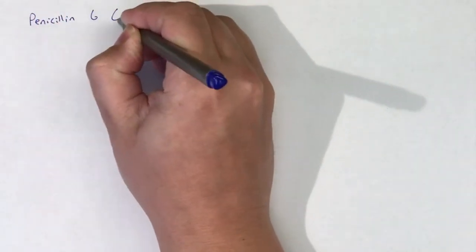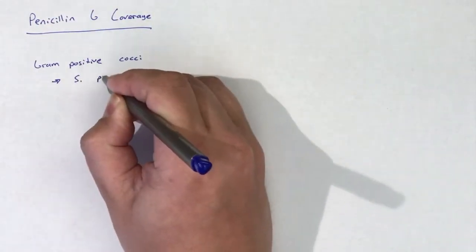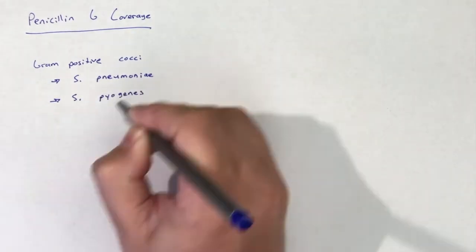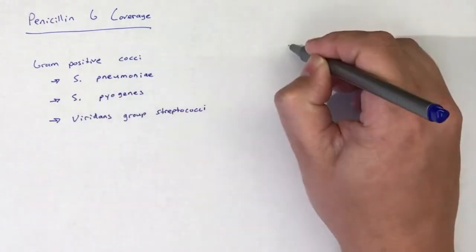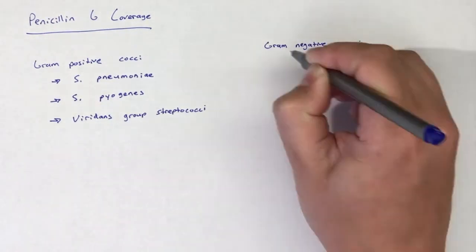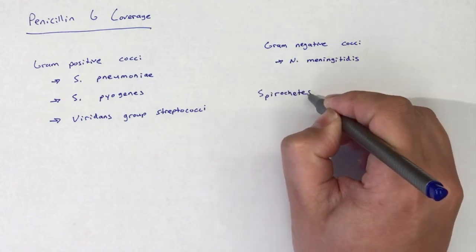The spectrum of bacterial coverage for penicillin G is narrow due to the prevalent resistance. Gram-positive cocci, including S. pneumoniae, S. pyogenes, and viridans group streptococci are susceptible to penicillin G. In addition, certain gram-negative cocci, including Neisseria meningitidis,